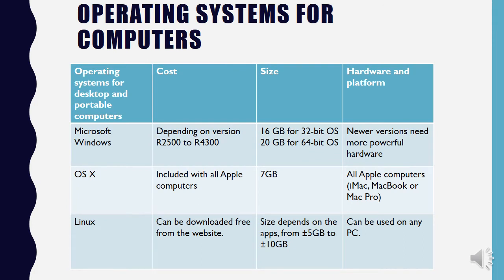Here is a table of operating systems for computers. For desktops or portable computers, we have Microsoft Windows — the most common. It is usually included when you buy a new computer, but if you had to buy it separately it would cost between two thousand five hundred and four thousand three hundred rand, depending on whether you're buying a home version or pro version.